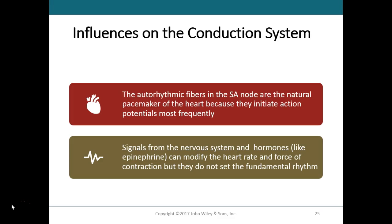The SA node normally sets the rhythm, but if it becomes damaged or diseased, the slower AV node can take over as pacemaker, though its spontaneous pacing rate is only about 40 to 60 times a minute. If the activity of both nodes is suppressed, the heart can still be maintained by the auto rhythmic fibers in the ventricle — the AV bundle, bundle branches, and Purkinje fibers — but their pacing rate is very slow at 20 to 35 beats per minute, causing inadequate blood flow to the brain. In this condition, an artificial pacemaker can be surgically implanted, usually just beneath the skin inferior to the clavicle.